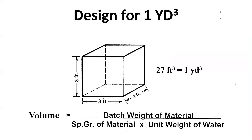The goal of an ACI-211 Mixed Design — sometimes called the Absolute Volume Method — is all about designing a cubic yard. You're trying to figure out, in a 3×3×3, or 27 cubic foot box, which is one cubic yard, how much cement, how much water, rock, and sand you're going to put in that box. And don't forget air — how much air is going in that box as well.